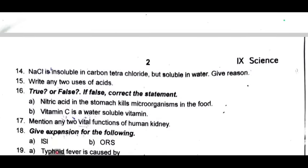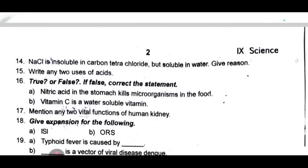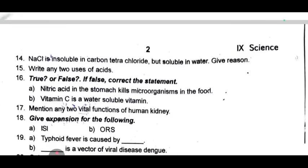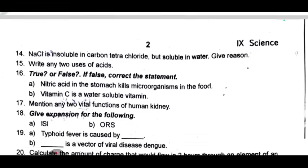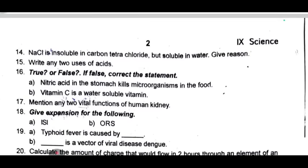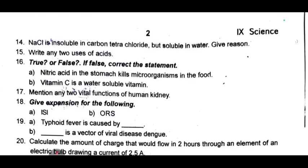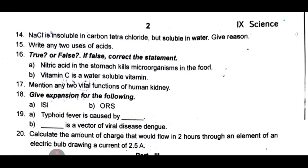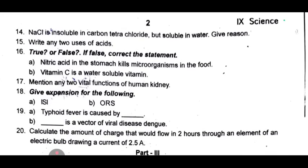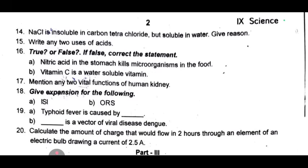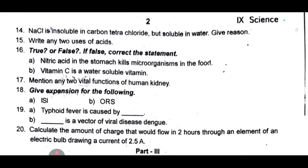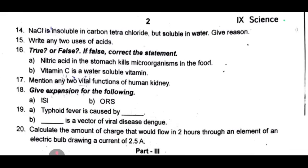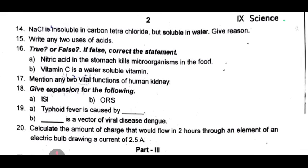18th one: give an expansion for the following. 19th one: typhoid fever is caused by dash. B: dash is a vector of the viral disease dengue. 20th one: calculate the amount of charge that would flow in two hours through an element of an electric bulb drawing a current of 2.5 A.